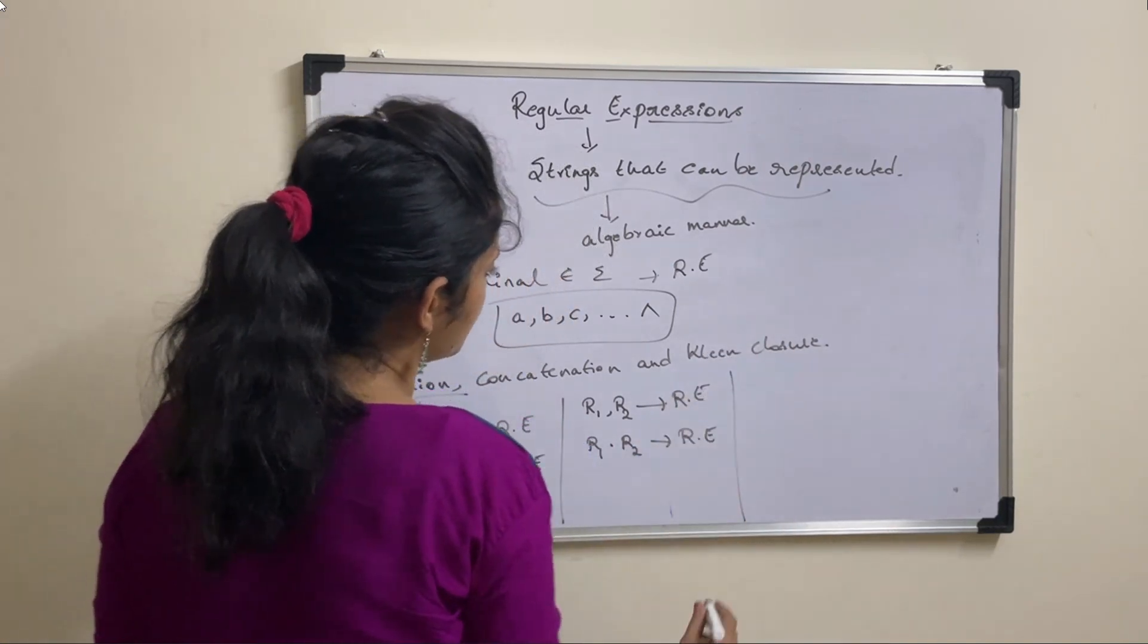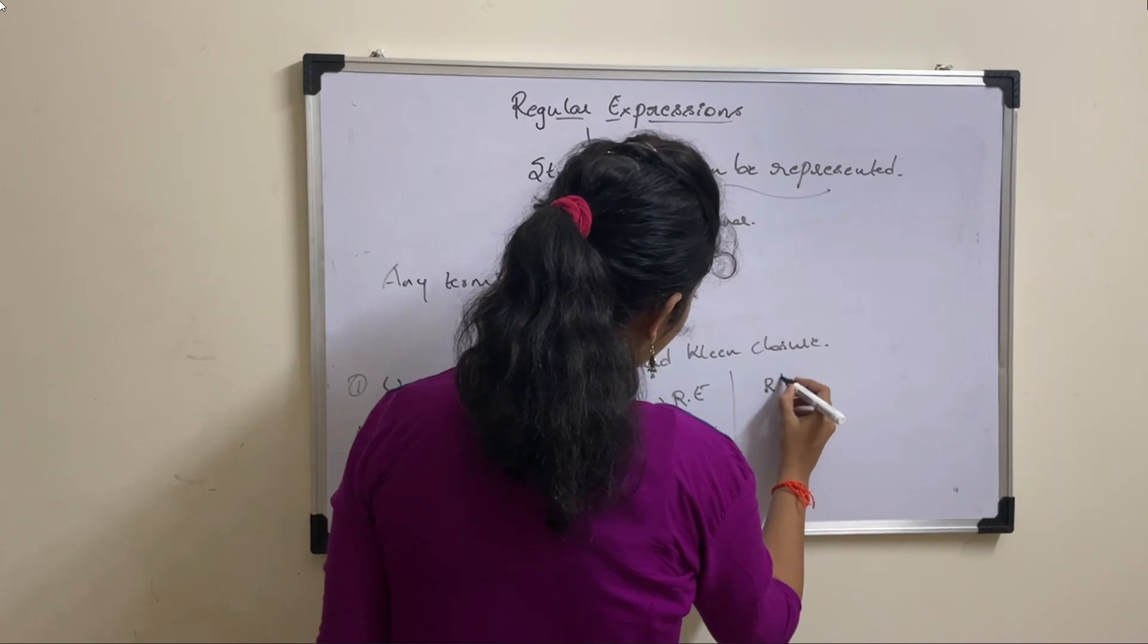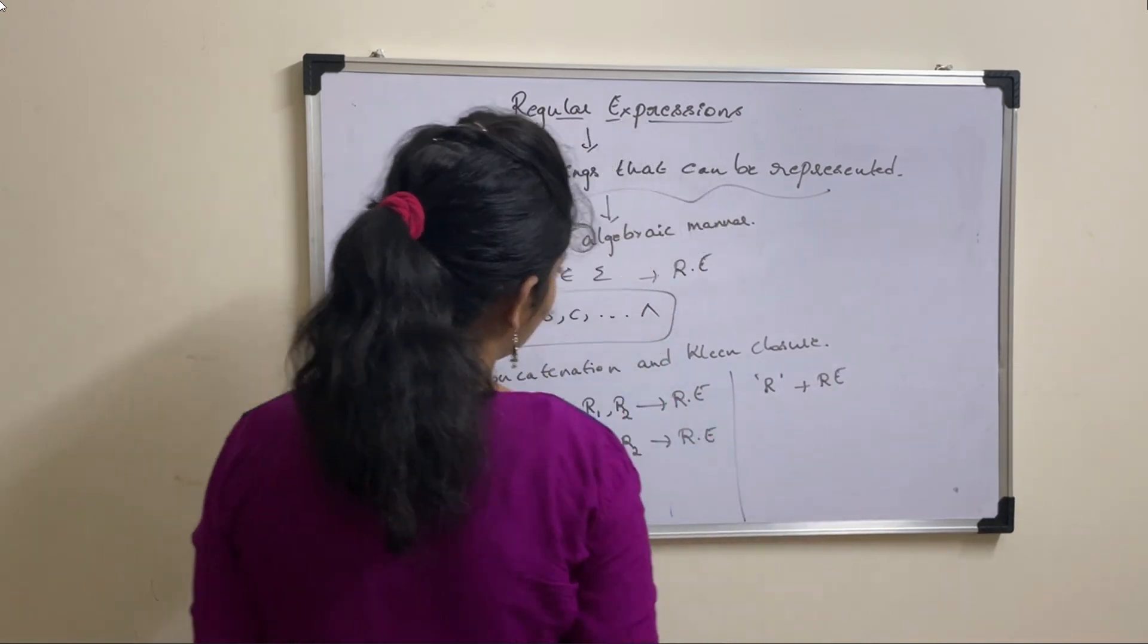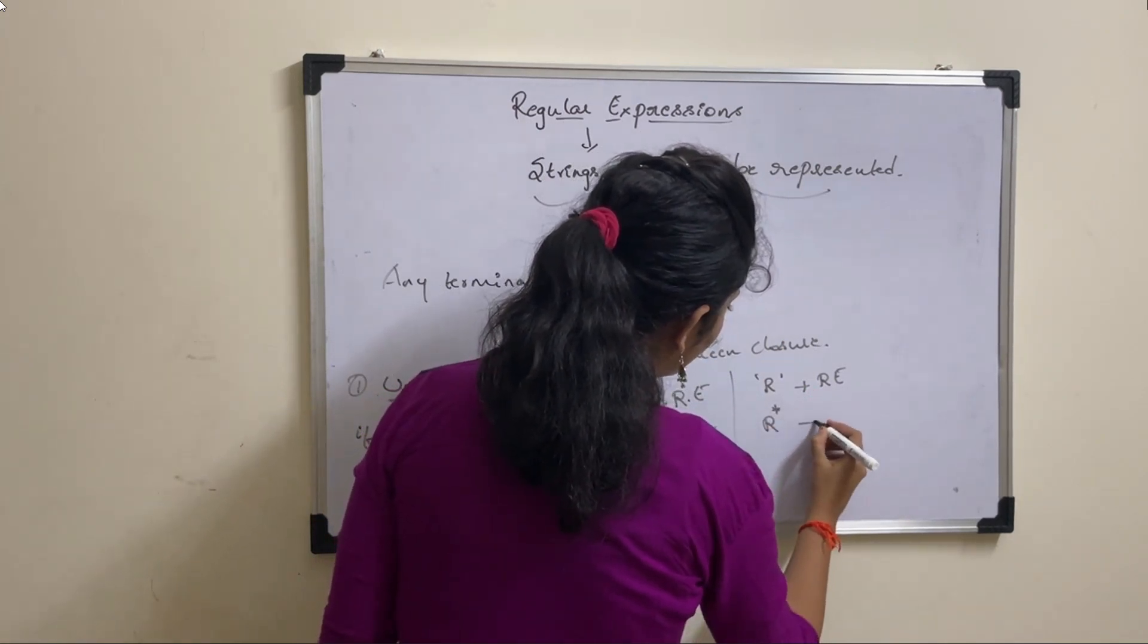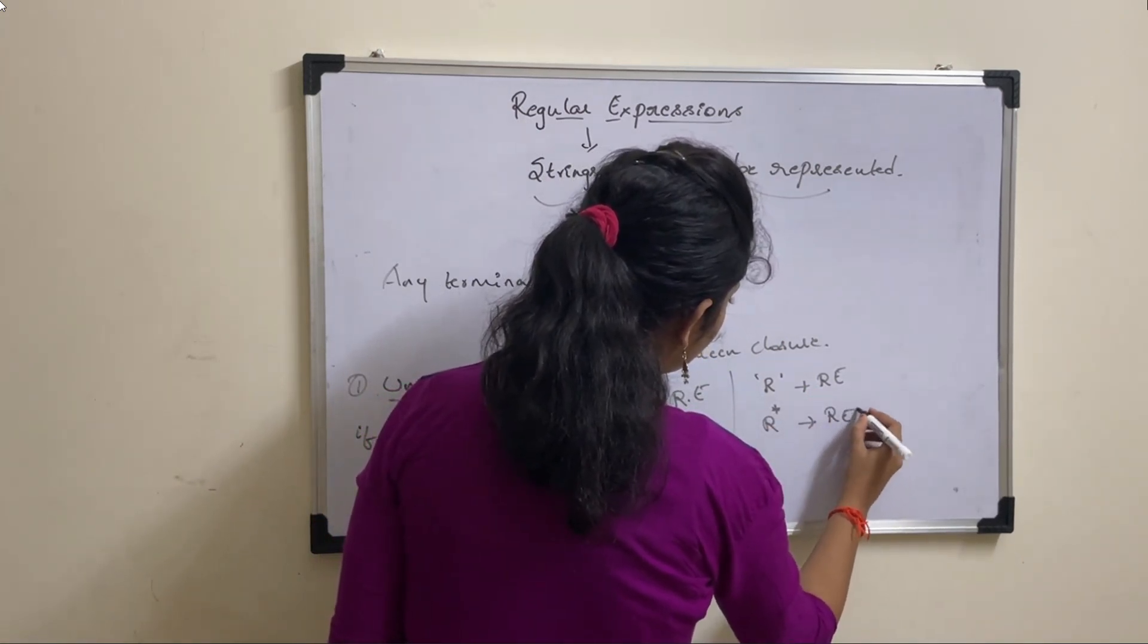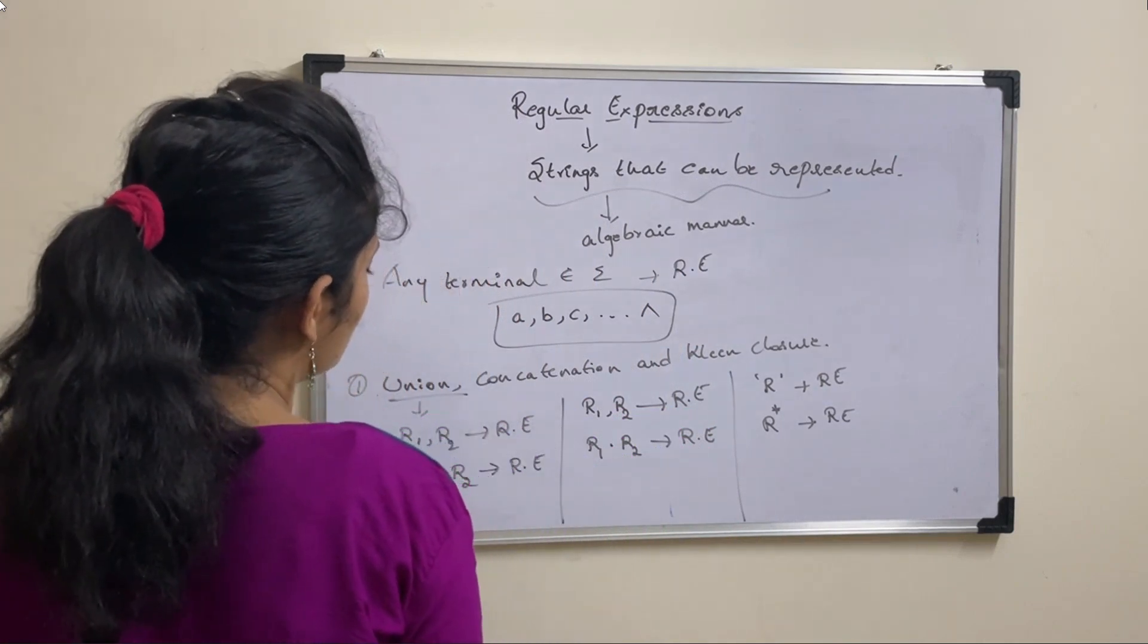For Kleene closure, say suppose R is a regular expression, then Kleene closure means R star. Then R star is also a regular expression.